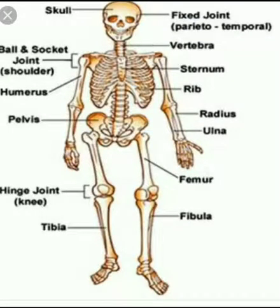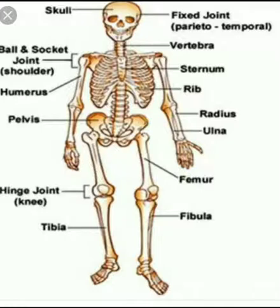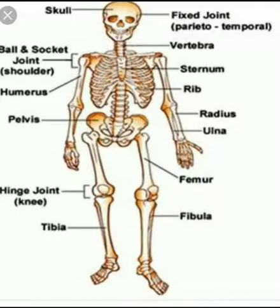We can move some parts of our body because of joints. Just try to move your neck in different directions. Now try to do the same with your knee — is there any difference in the movement? Yes, there is. A joint is a place where two or more bones are connected. These are the places in our body where two or more bones are interlinked.